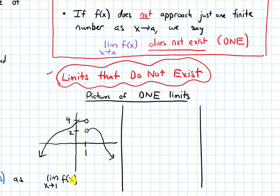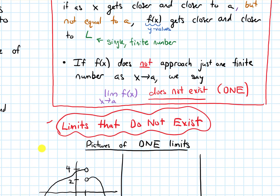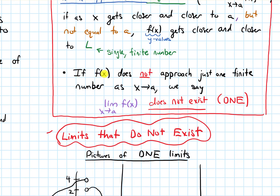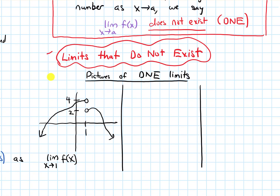Remember, as we talked about at the end of the last video, if the y values of f of x don't approach just one finite number as x approaches a, then that's when our limit does not exist. In this picture, from the left, the y values seem to be getting really, really close to 4. And then from the right side of 1, the y values seem to get really, really close to 2.